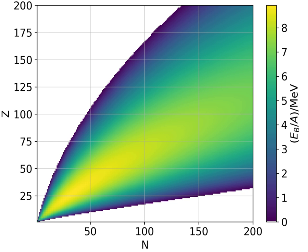In order to quantify the energy released or absorbed in any nuclear transmutation, one must know the nuclear binding energies of the nuclear components involved in the transmutation.